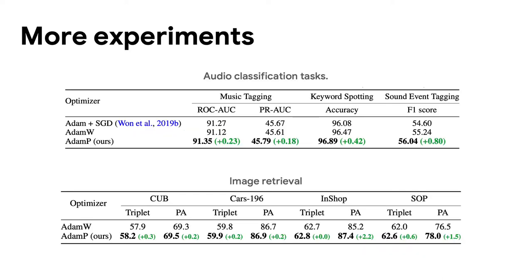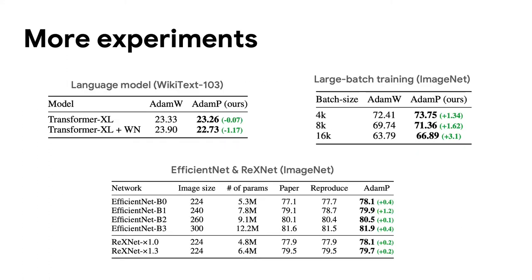AdamP optimizer also outperforms other optimizers on audio classification and image retrieval tasks. In language models based on transformer architecture, AdamP improves performance.